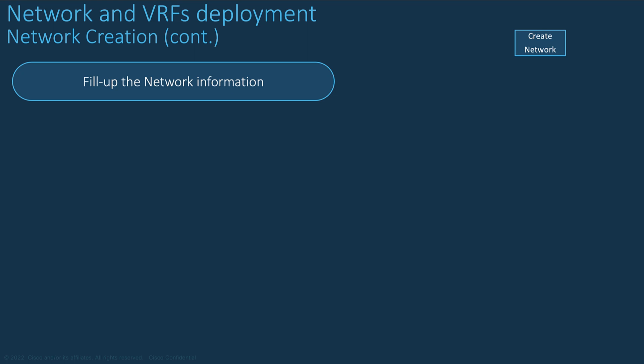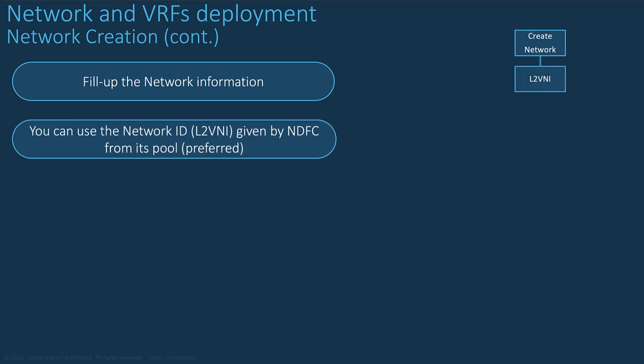Select the topology overview of your fabric. You need to select the multi-site domain scope if the overlay network concerns multiple sites. Select the Network tab and from the action drop-down menu, create a network. Start with the Layer 2 VNI — NDFC provides the Layer 2 VNI from its pool configured under the fabric settings. If you prefer, you can use your own VNID, but the recommendation is to leave NDFC to consume the predefined resources automatically.